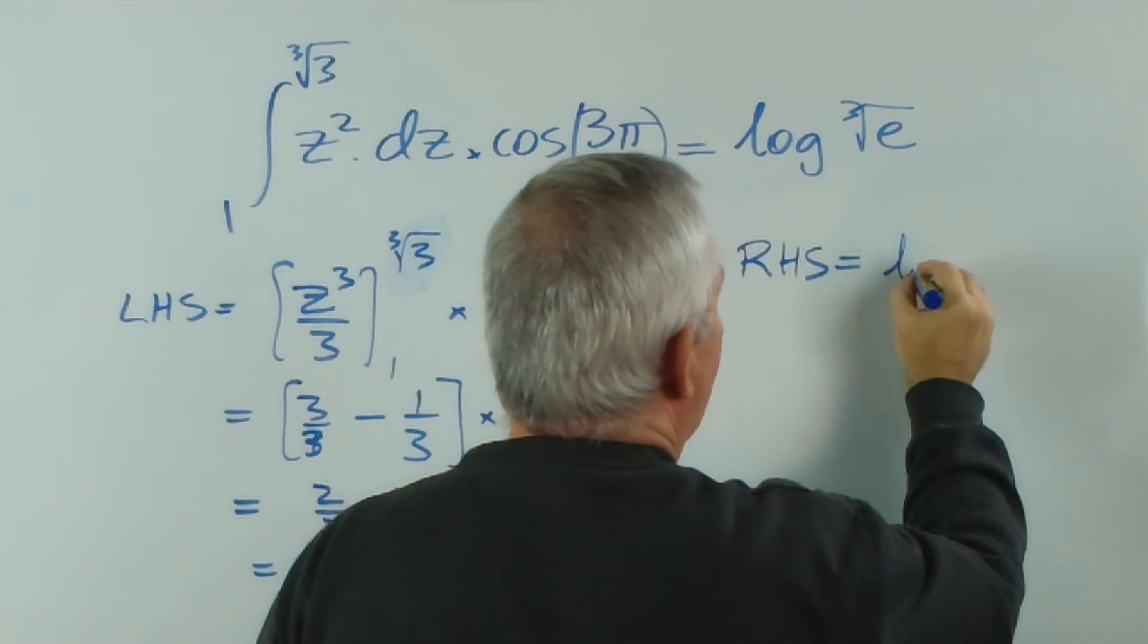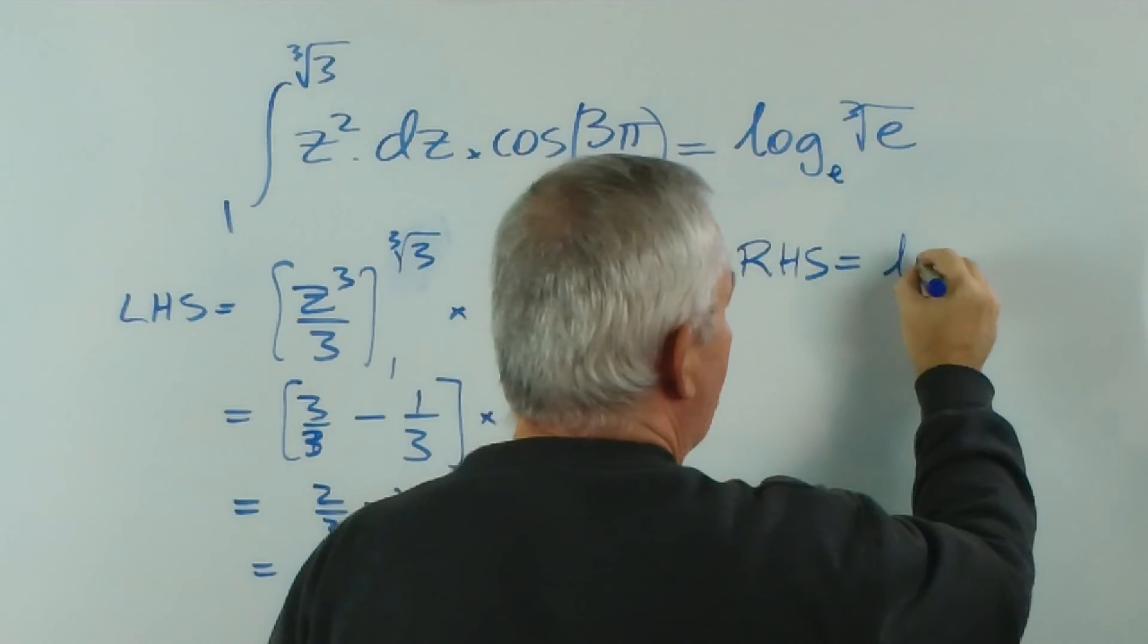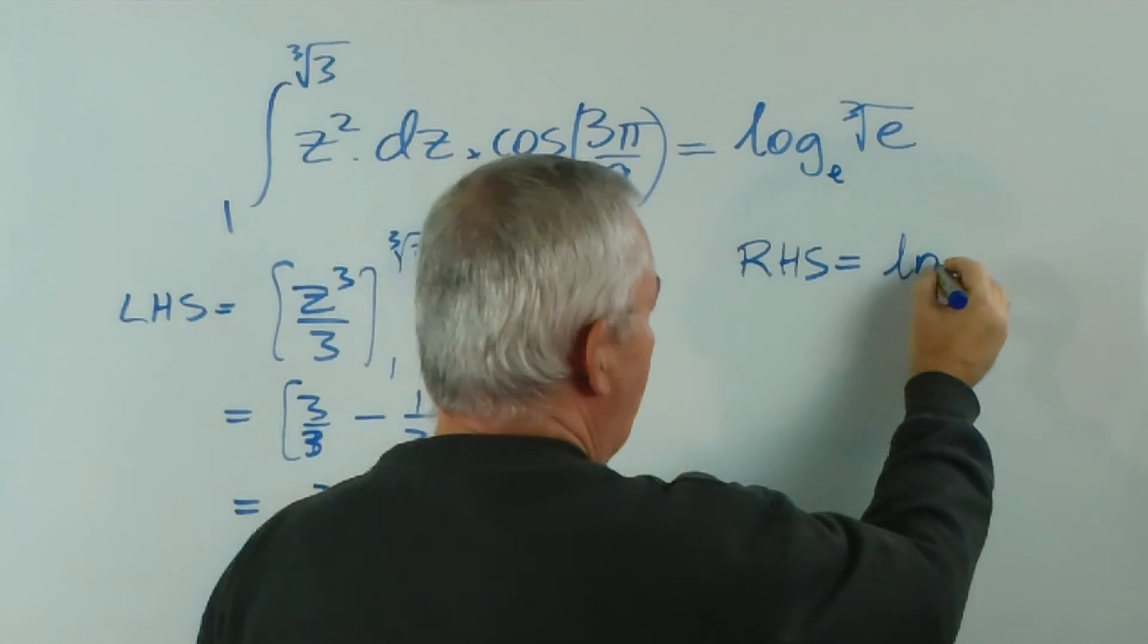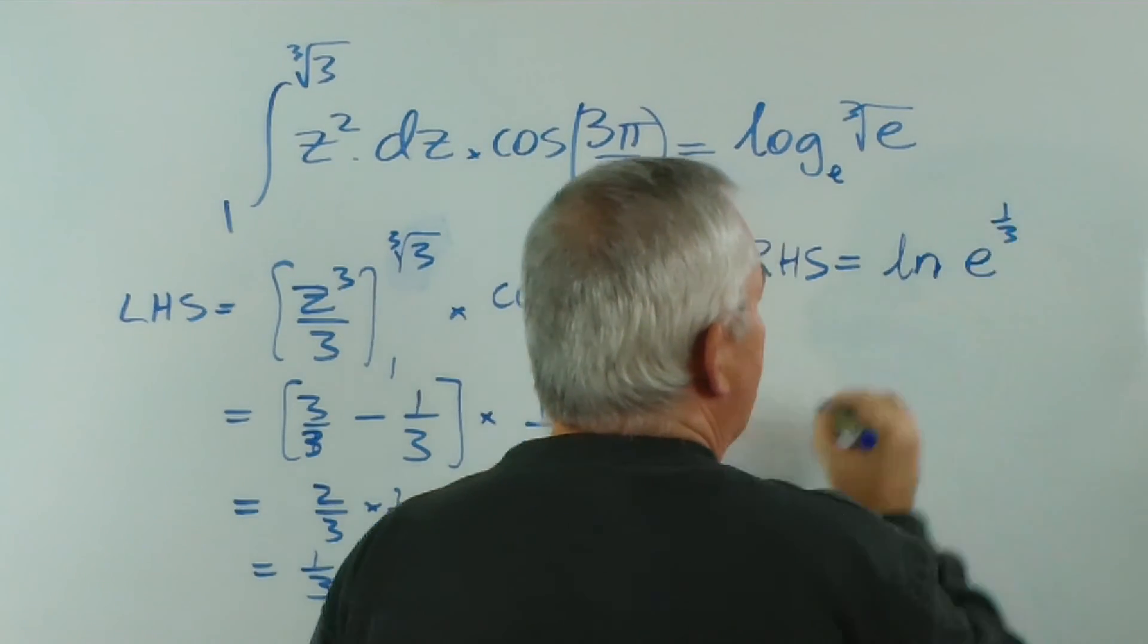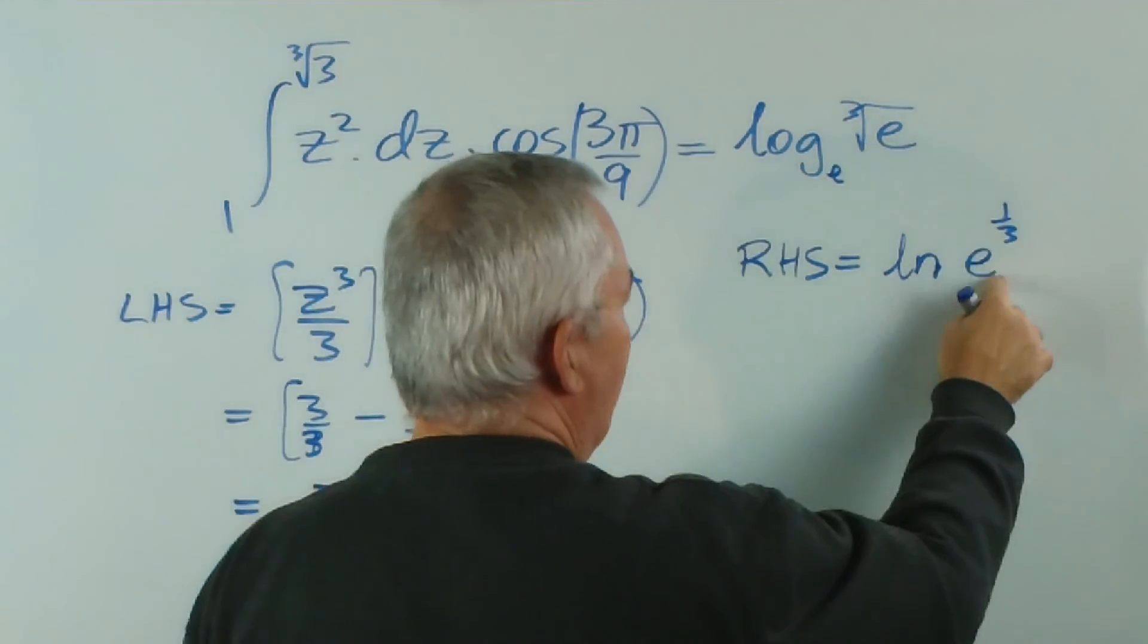is the logarithm... by this we mean the natural logarithm... which I prefer to write ln... of e to the 1 third... that's the cube root of e...